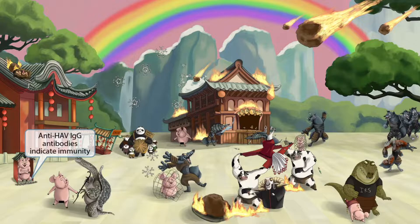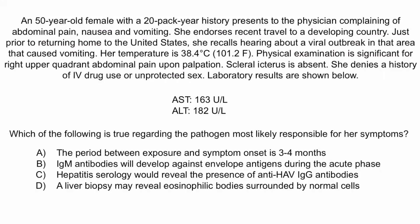Now that we've covered the image, let's review with a question. A 50-year-old female with a 20-pack-year history presents to the physician complaining of abdominal pain, nausea, and vomiting. She endorses recent travel to a developing country, and just prior to returning home to the United States, she recalls hearing about a viral outbreak in that area that caused vomiting. Her temperature is 38.4°C (101.2°F). Physical examination is significant for right upper quadrant abdominal pain upon palpation. Scleral icterus is absent. She denies a history of IV drug use or unprotected sex. AST is 163 and ALT is 182. Which of the following is true regarding the pathogen most likely responsible for her symptoms?